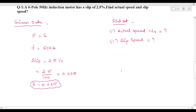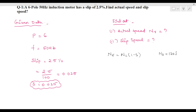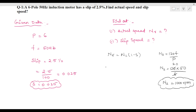For actual speed, the formula is Nr = Ns × (1 - s). We first find Ns: Ns = 120f / P = 120 × 50 / 6 = 1000 rpm. Now, Nr = 1000 × (1 - 0.025) = 1000 × 0.975.